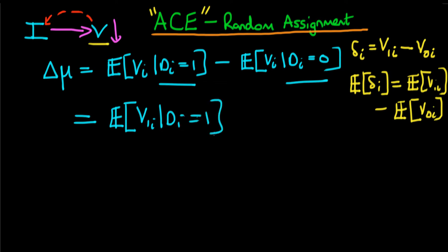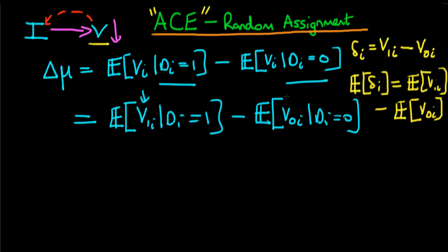We then take off the expectation of V0I given that DI is equal to 0, because in both cases this is actually the thing which is observed: V1I when a state does receive infrastructure spending, and V0I the level of violence observed in a state which doesn't obtain infrastructure spending. Given that DI is randomly assigned, DI — whether a state receives infrastructure spending — is completely independent of their levels of violence.